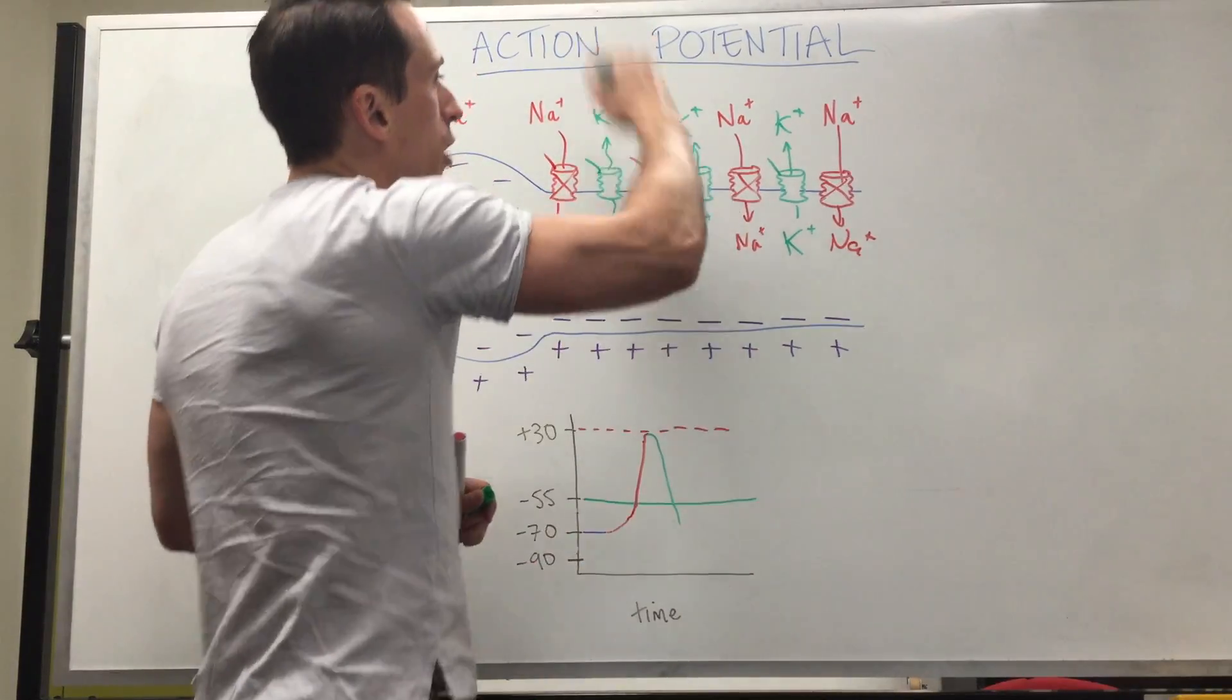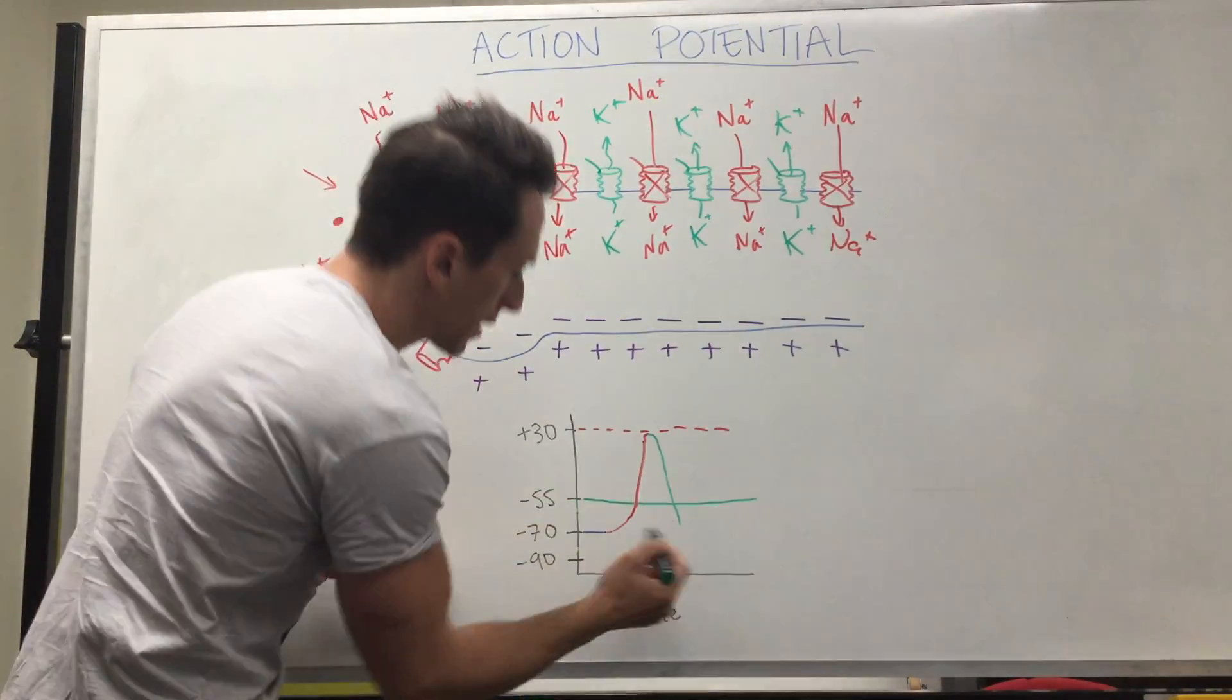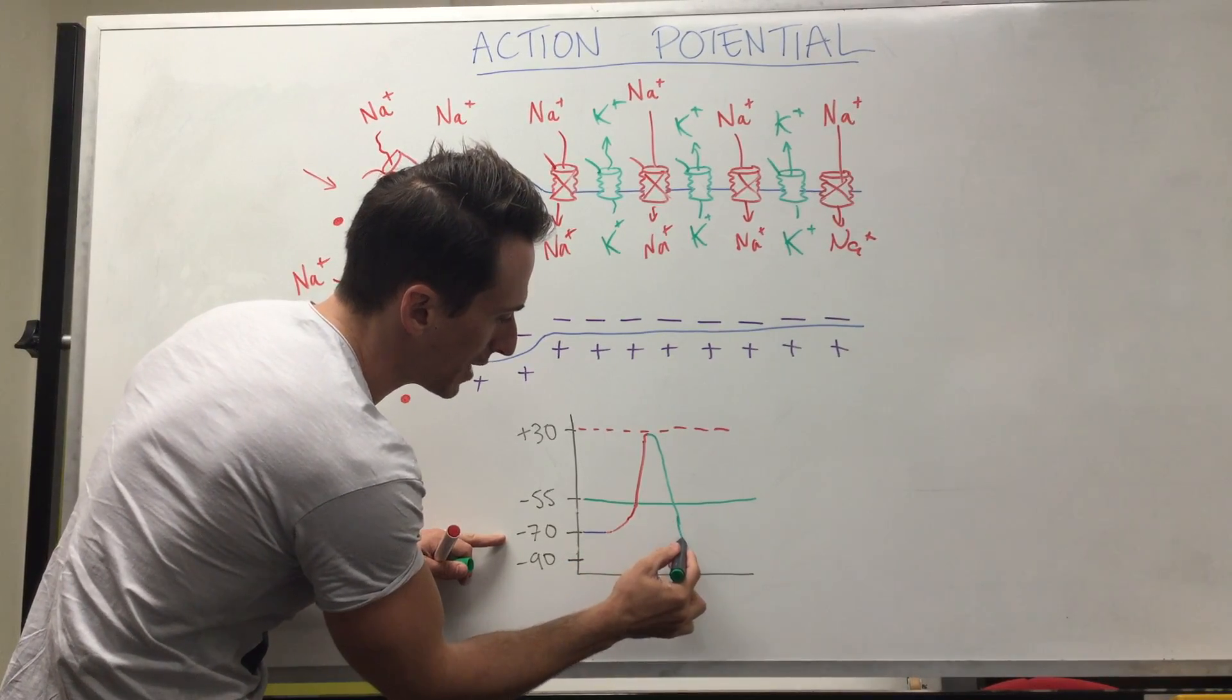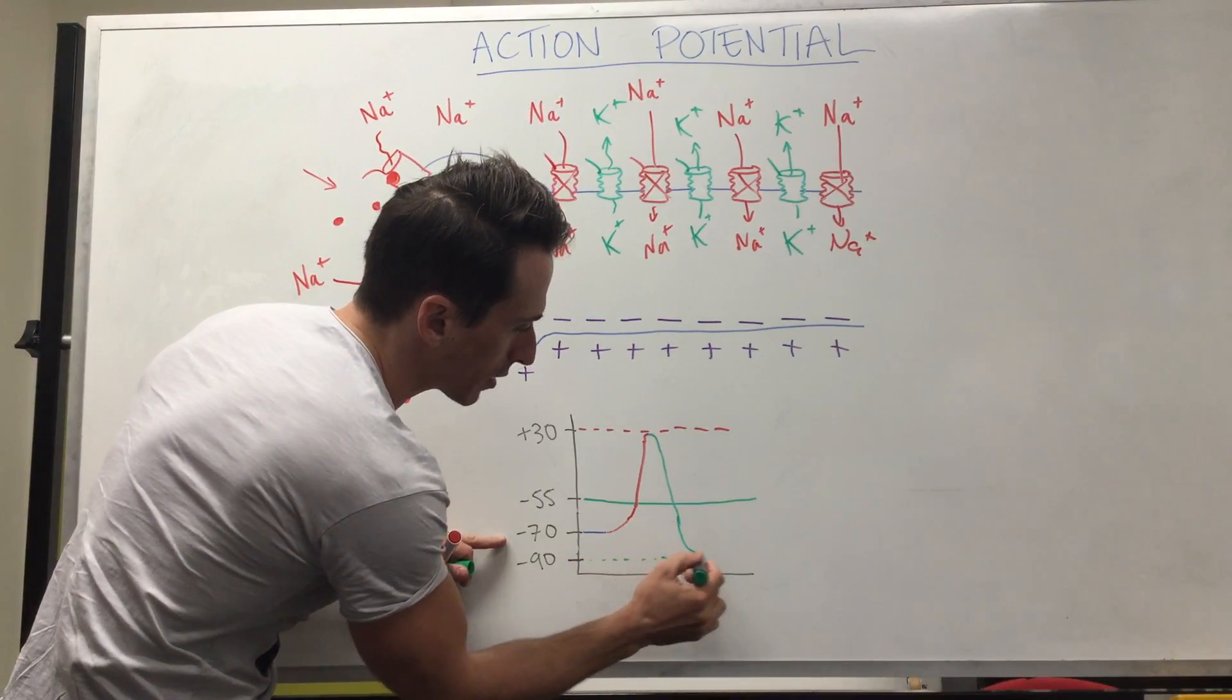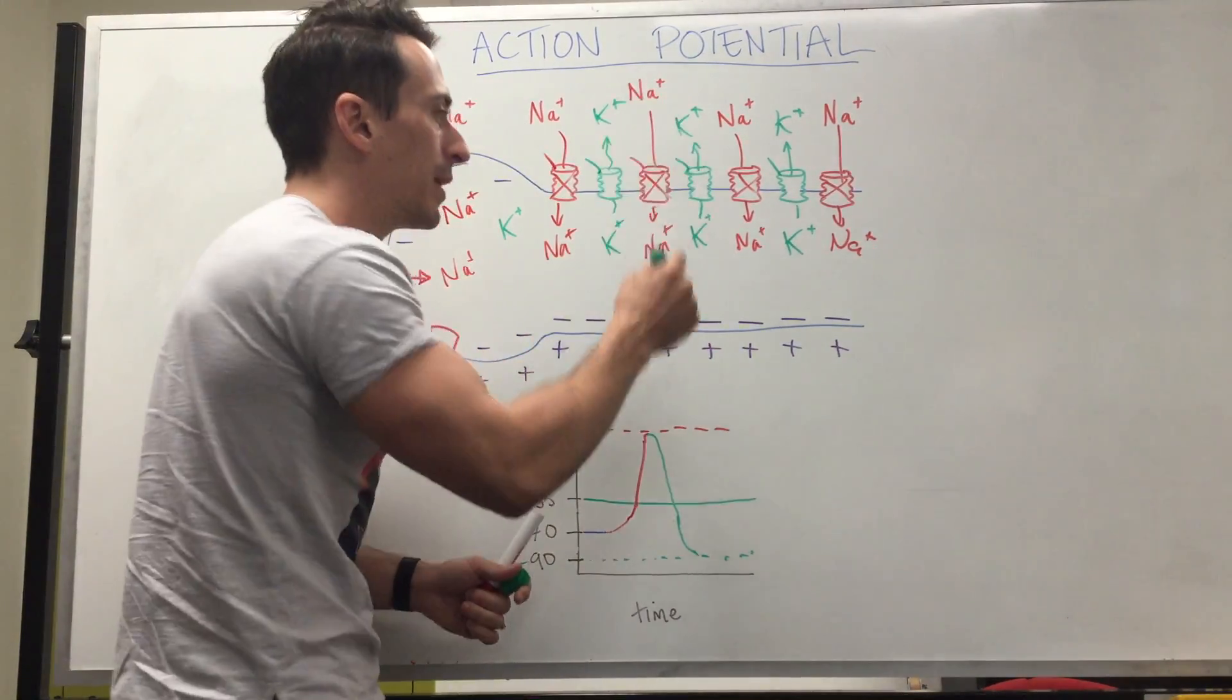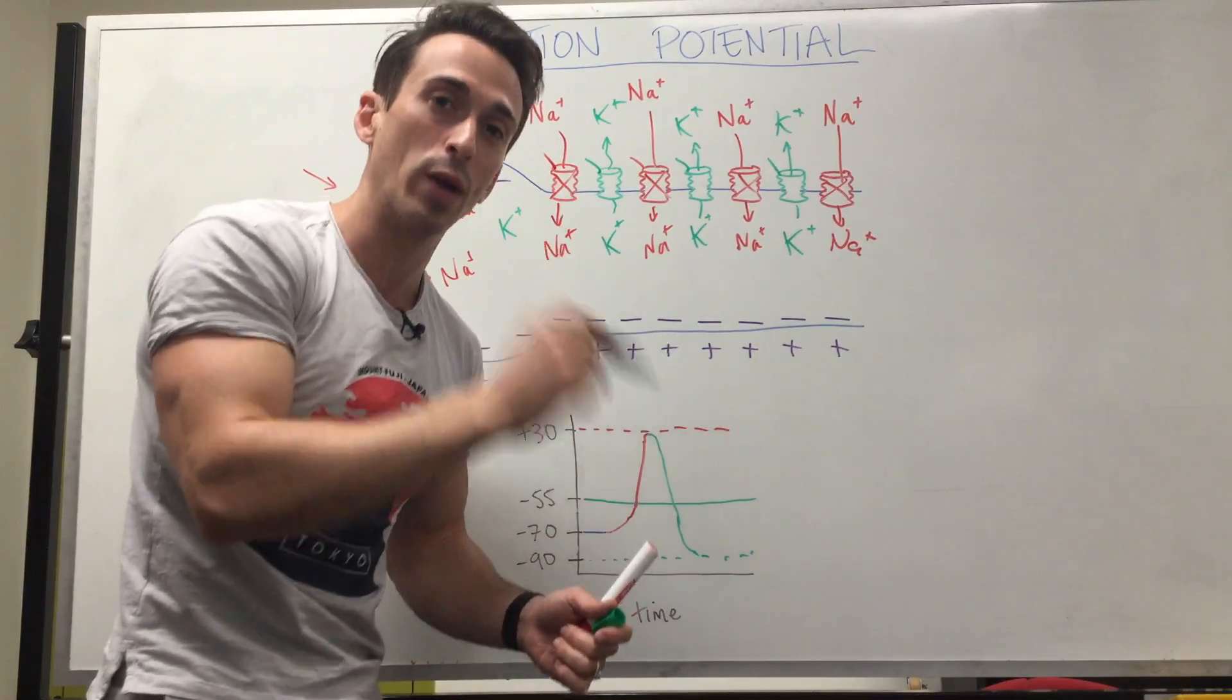That means it becomes negative again inside that neuron and that means this graph starts to drop back down again. In actual fact, so much positive potassium leaves that it goes below the resting membrane potential of -70 and goes to -90. Why does it go down this far?